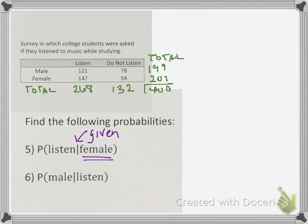When we're looking for students that listen, given that they are female, we can mark up just our female row in this case. Now we're only looking for the students that listen out of that row, which is going to be 147. Because we are looking for just those that listen out of only the female students, our female total is going to be our denominator this time. So our denominator will now be 201.